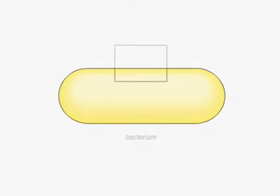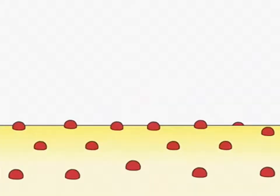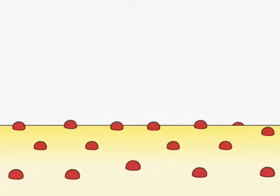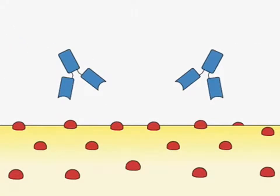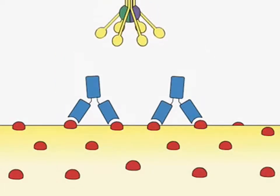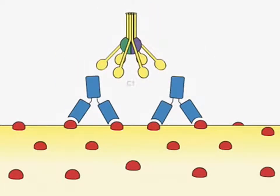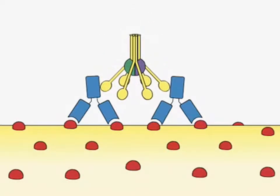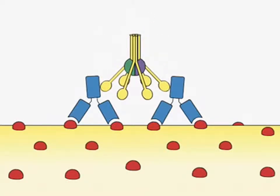Activation of the complement system occurs on surfaces such as the surface of a bacterium, as shown here. In this example, the activation of complement is initiated by antibodies that bind to bacterial cell surface antigens. The C1 complement complex, made up of one molecule of C1Q, two molecules of C1R, and two molecules of C1S, binds to the aggregated antibody molecules on the surface of the bacterium.